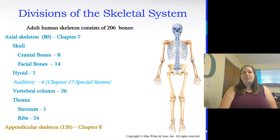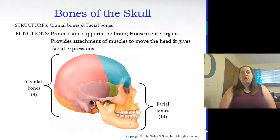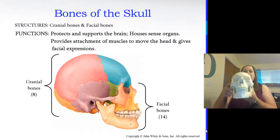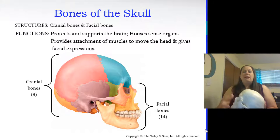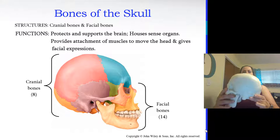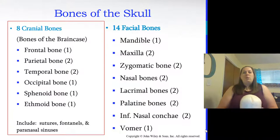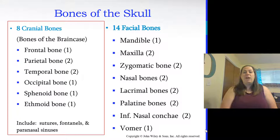Let's focus on the bones of the skull first. The skull is made of cranial bones and facial bones — you need both to make a complete skull. There are 8 cranial bones and 14 facial bones. The 8 cranial bones are: 1 frontal, 2 parietal, 2 temporal, 1 occipital, 1 sphenoid, and 1 ethmoid. We'll also talk about sutures, fontanelles, and paranasal sinuses in this section.